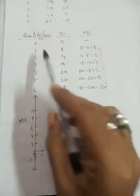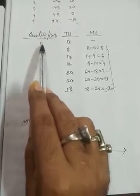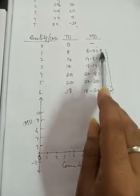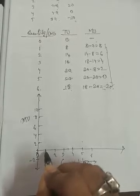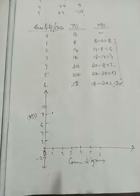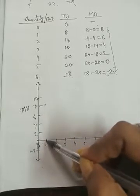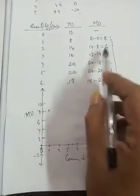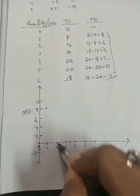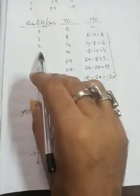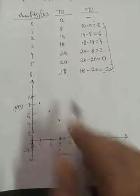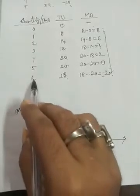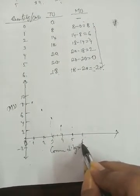To draw the marginal utility curve, we plot combinations of commodity units and marginal utility. At unit 1, MU is 8 — we mark this point. At unit 2, MU is 6. At unit 3, MU is 4. At unit 4, MU is 2. At unit 5, MU is 0. At unit 6, MU is minus 2. We plot all these points on the diagram.